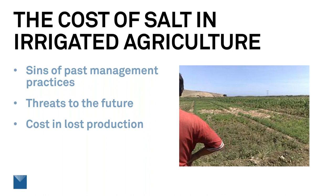As we'll see, salt is in the water that we apply for irrigation. And if the salt and the water are not managed properly, the salt will build up in the soil, decreasing yields and finally ruining the land for agricultural production. The costs of this mismanagement are enormous — a recent calculation just for the Central Valley in California was a billion dollars. So it's worth it to know what's going on and to manage for sustainable production.